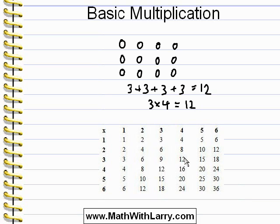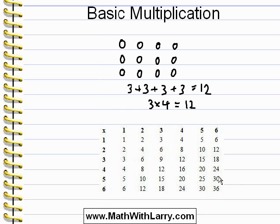Let's try another one. Let's multiply five times six. I'll go down this column for five, to the five, and then I'll go across this row to the six, see where they intersect, and the answer is thirty. Now let's take a look at a few important things regarding the multiplication table.